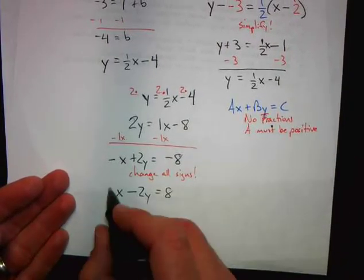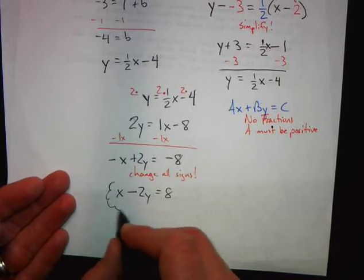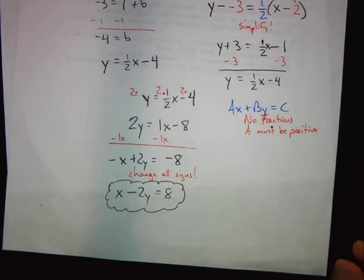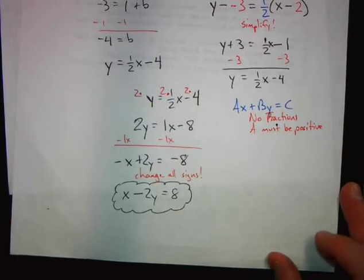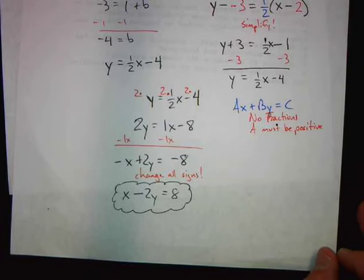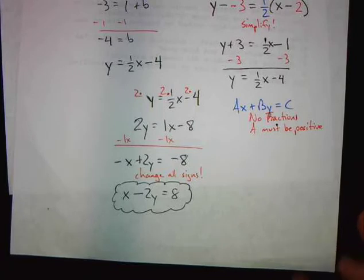We have our equation in standard form. That is how we write equations in standard form. And now we can tell all sorts of things about this line — we can find the x-intercept, the y-intercept, the slope — all from standard form.